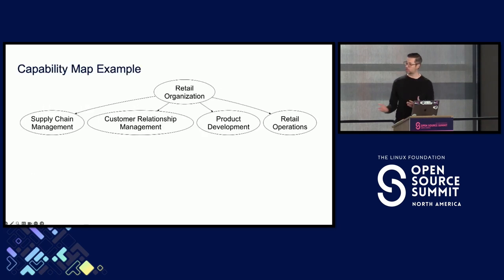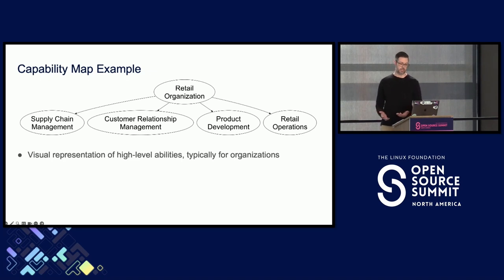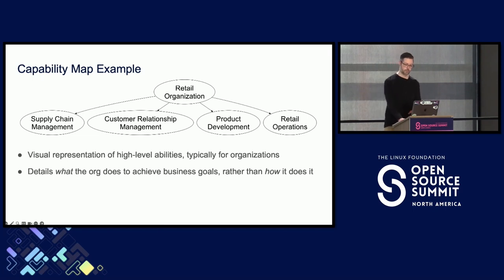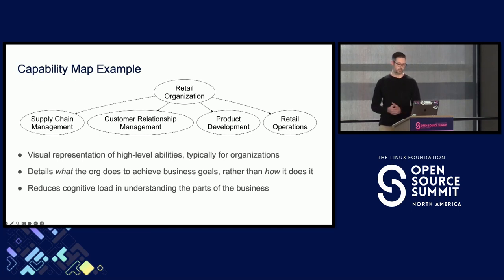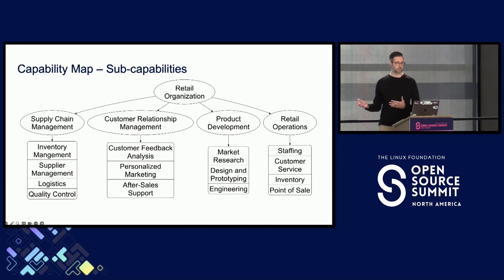I have a quick example capability map here. Typically these are applied in the context of an organization. The idea is to break down visually the abilities that are needed to run the business. It will usually detail what the organization does — not how it does it. Hopefully it can make it easier to understand the different parts of the business. This is a high-level breakdown, and then we can go further into each of these capabilities and break it down even further.